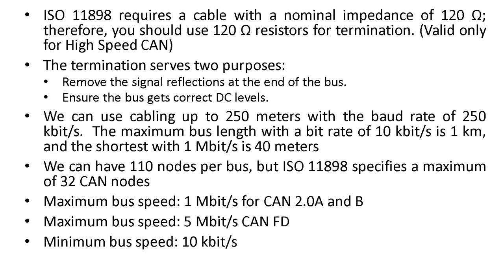The network can be 40 meters if we use 1 megabit speed. We can have 110 nodes per bus as a physical limitation, but ISO specifies a maximum of 32 CAN nodes. The maximum bus speed for CAN 2.0a and 2.0b is 1 megabit per second, and for CAN Flexible Data Rate it is 5 megabits per second.